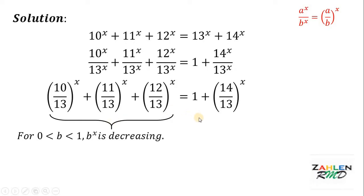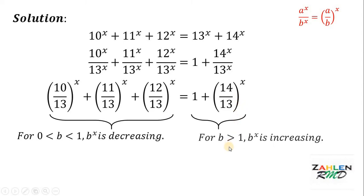Now how about the right-hand side? Take note that 14/13 is greater than 1 — this is just 1 plus 1/13. Now for all b that is strictly greater than 1, b raised to x is increasing. Therefore, the right-hand side is an increasing function.